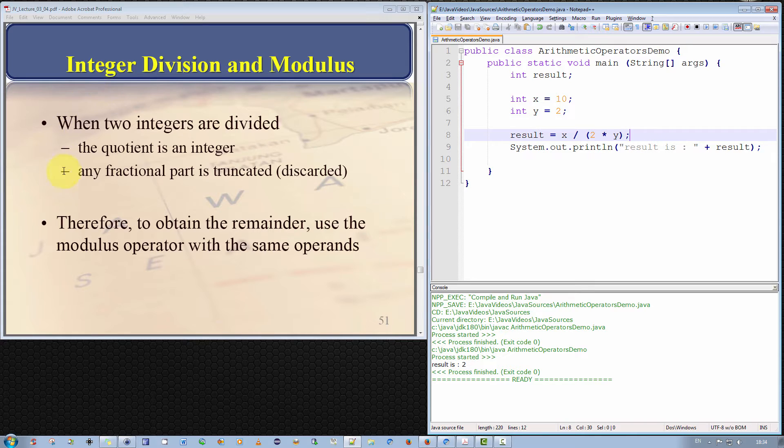Briefly when two integers are divided if the quotient is an integer then the fractional part is truncated that is discarded and that's exactly what happened here. Therefore to obtain the remainder use the modulus operator with the same operands. So let's do that.